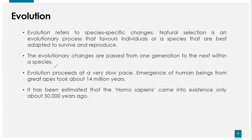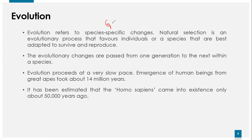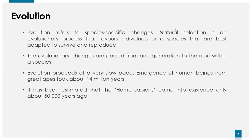To summarize the differences: growth is physical; development is both physical and observable across measurable stages; maturation is genetical; and evolution is species-oriented. These are the key differences you can understand between growth, development, maturation, and evolution.